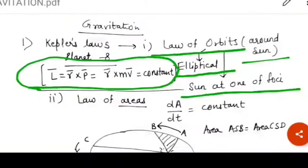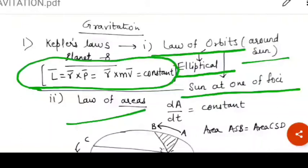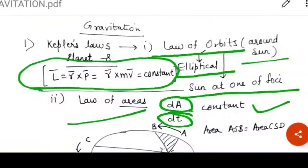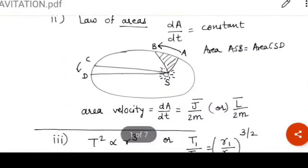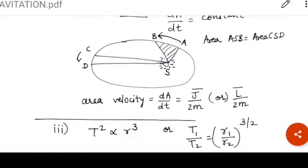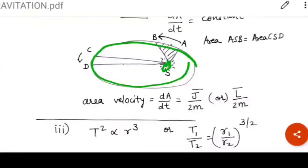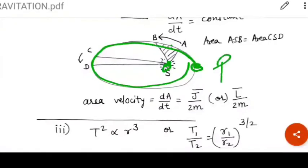Second law is the law of areas which says that the area covered in the unit time around the sun by the planet remains constant. We can see one example. Suppose this is sun and planet is revolving in the elliptical orbit. When the sun and planet are at nearest position, suppose at this position, this is called as perigee or perihelion.